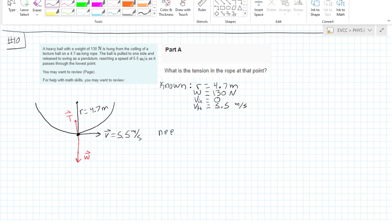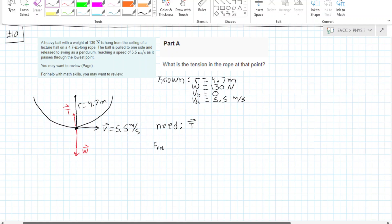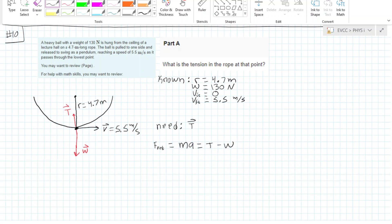We need to find the tension T. We know that the net force acting on this is mass times acceleration, equal to tension going up in the positive direction minus weight going in the negative direction.